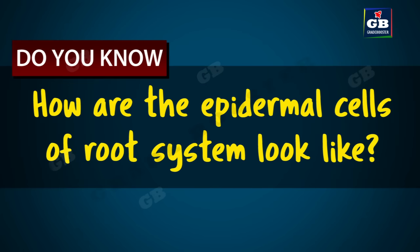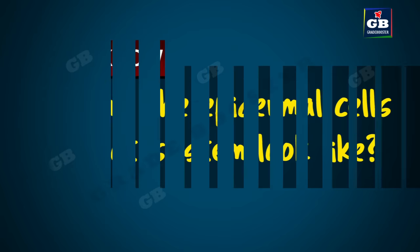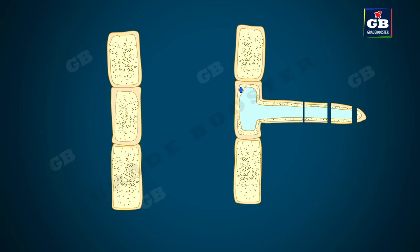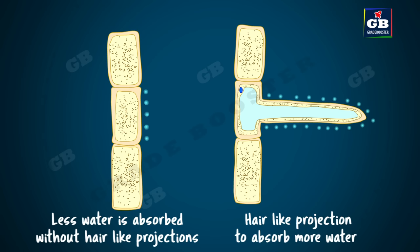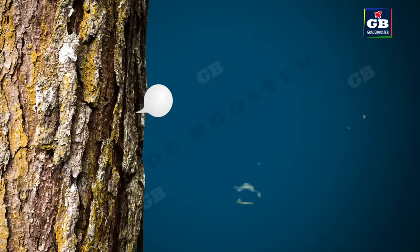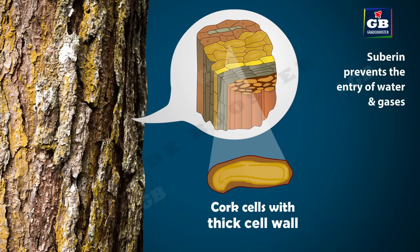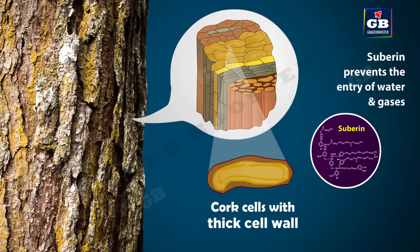The epidermal cells of roots bear long hair-like structures. These hairs greatly increase the total absorptive surface area and help to absorb more water. In big trees, the epidermis on the stem surface is replaced with dead cork cells. These cells have a chemical called suberin which prevents the entry of water and gases into the stem.